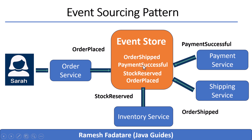All the steps — order placed, stock reserved, payment successful, order shipped — were recorded in the event store. You can replay them one by one to rebuild the full order status. Start from nothing: apply 'order placed' — okay, we have a new order. Apply 'stock reserved' — we know inventory was confirmed. Apply 'payment successful' — the payment went through. Finally, 'order shipped' — the phone is on its way. You didn't need to store any current state; you built it from events, and you can always do it again.